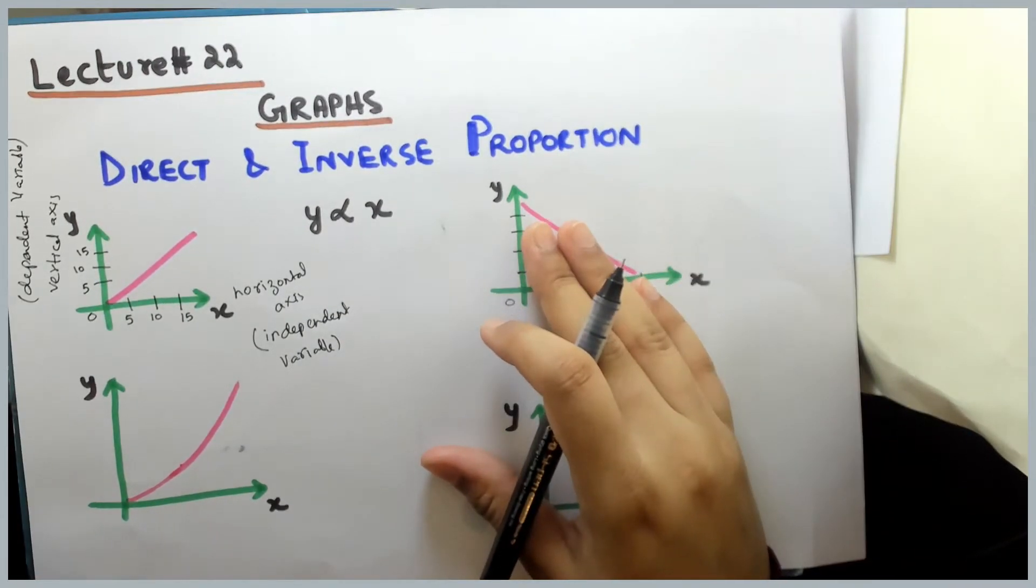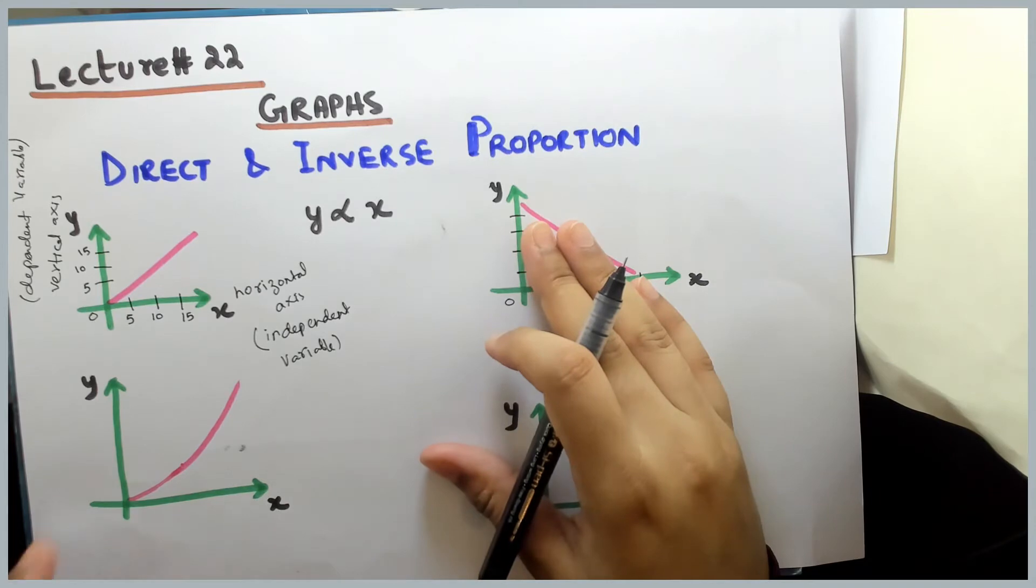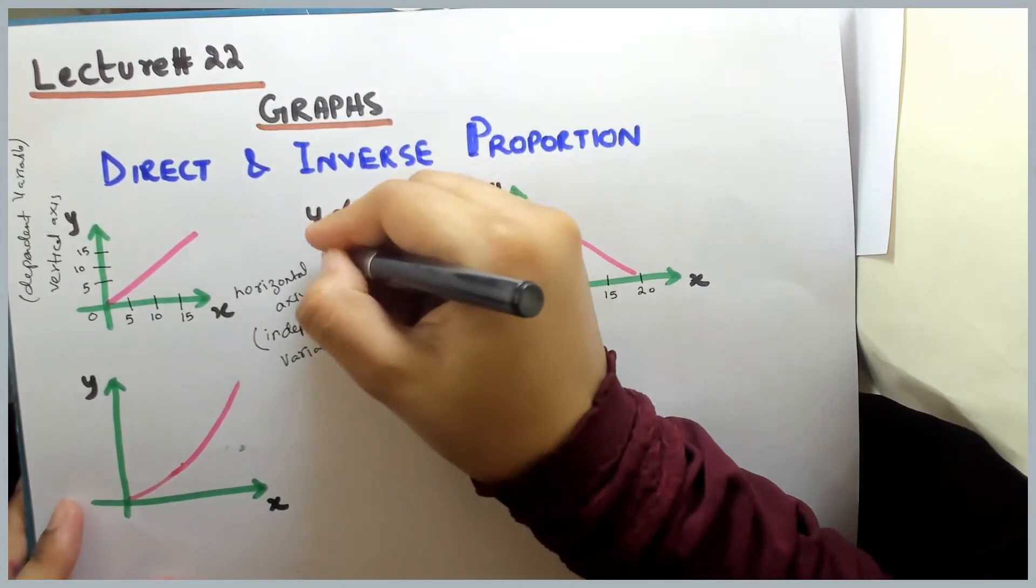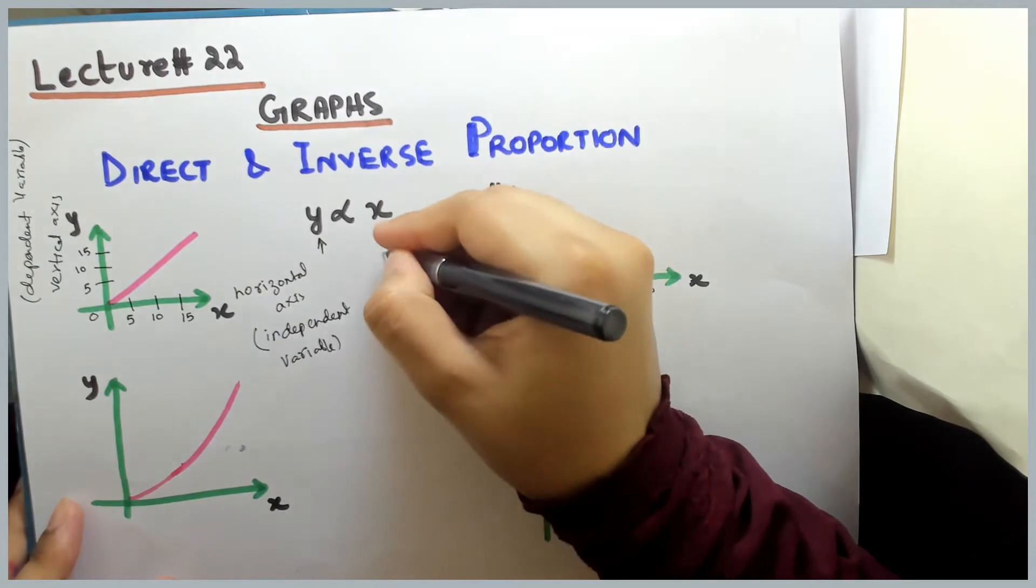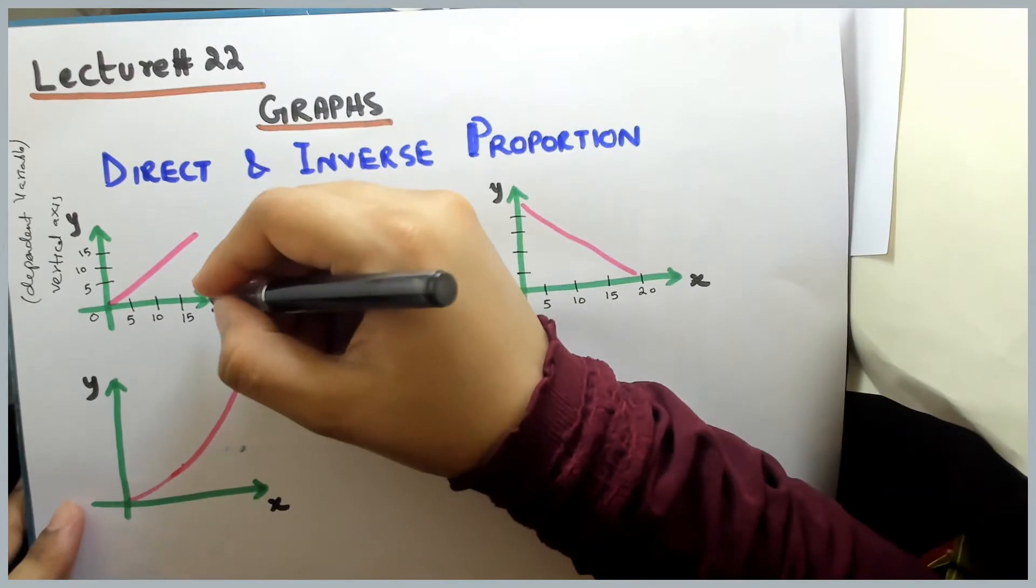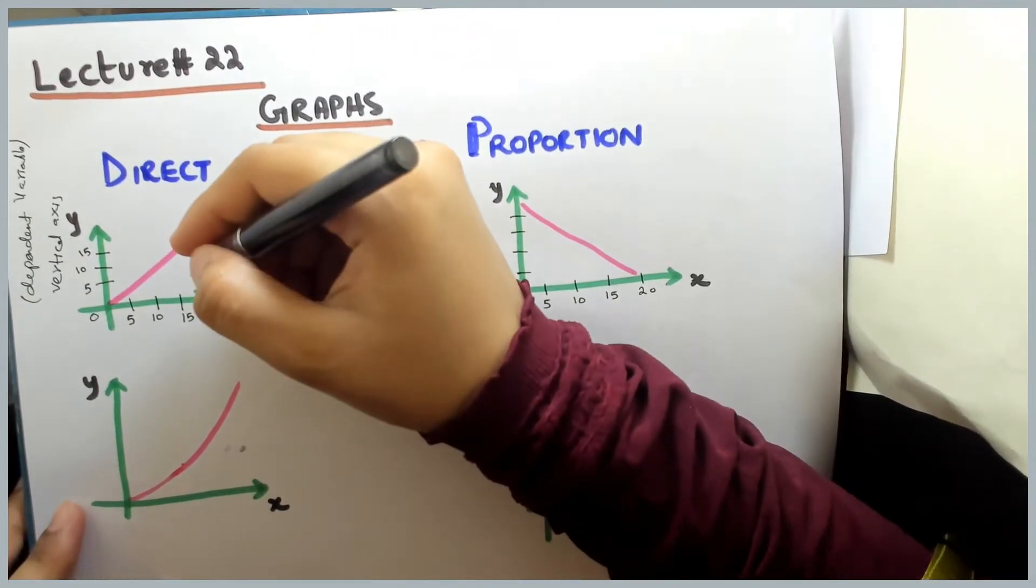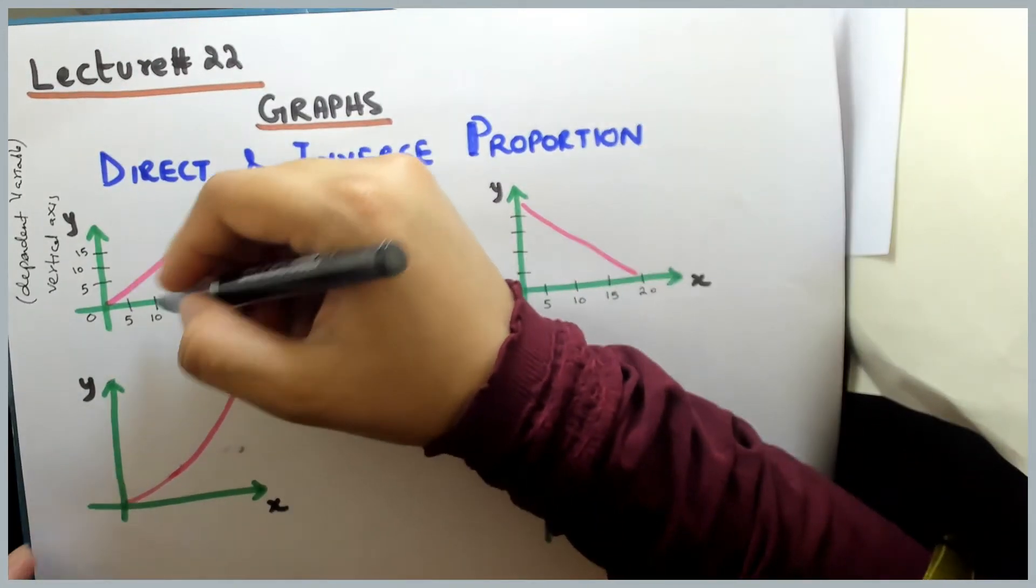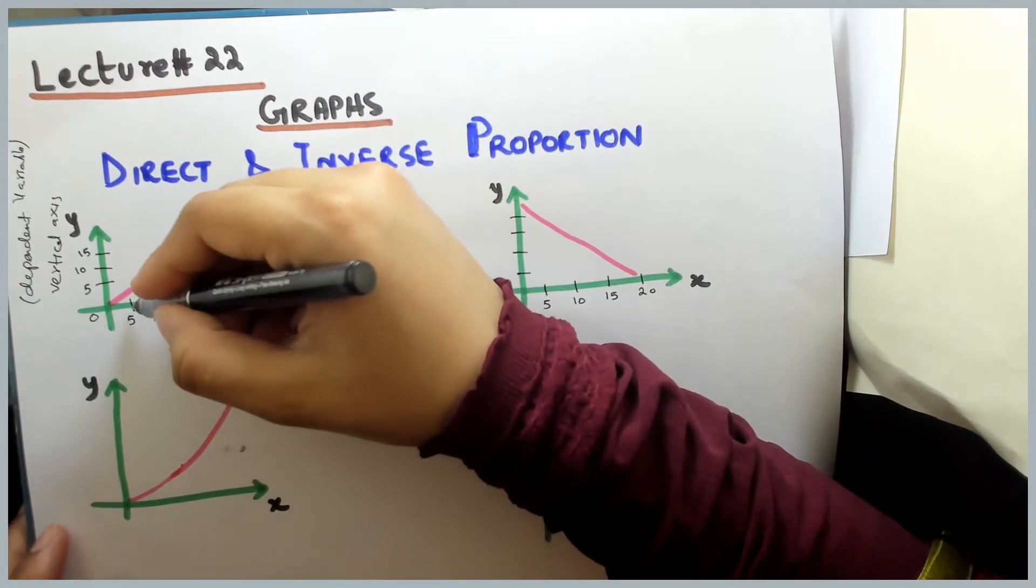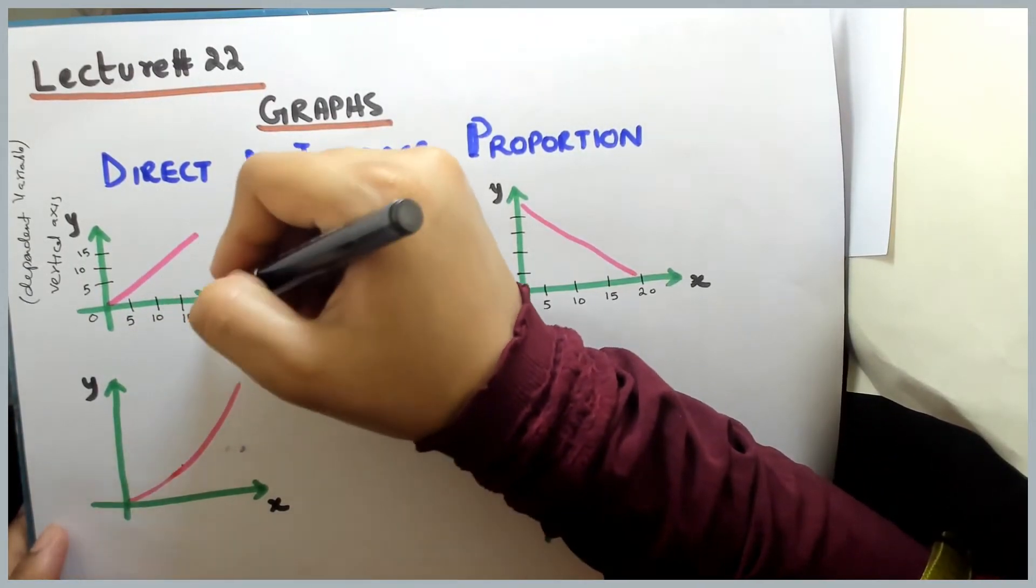First we all know that direct proportion. In direct proportion if x is increased then y will be increased. If x is decreased then y will be decreased. Here if you look at this graph, you can see that x's value is increased. First it was 0, then 5, then 10 and so on onward it is increased.